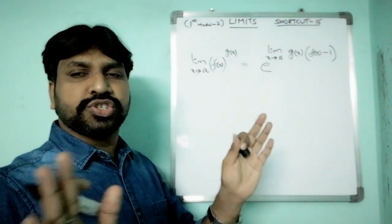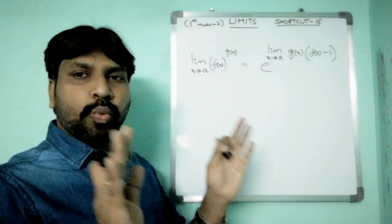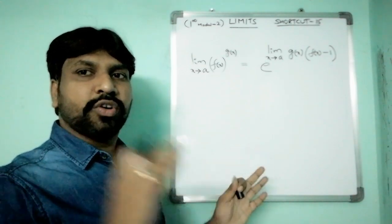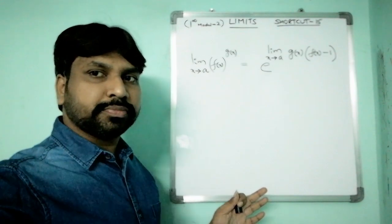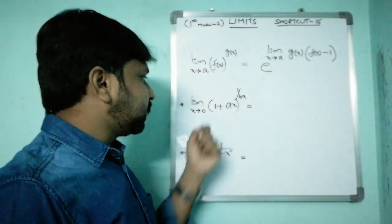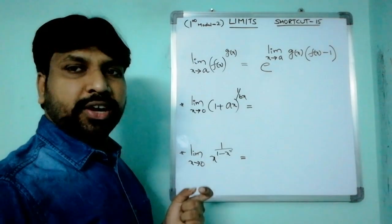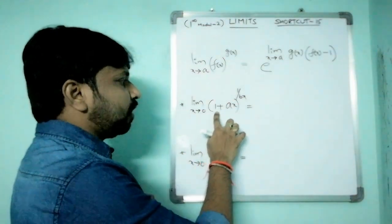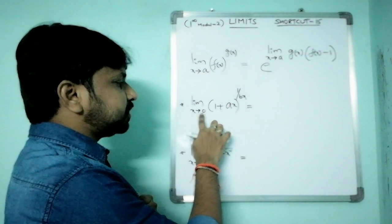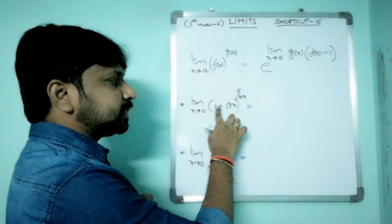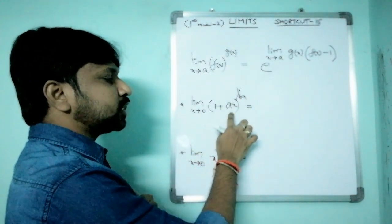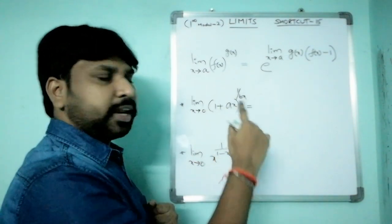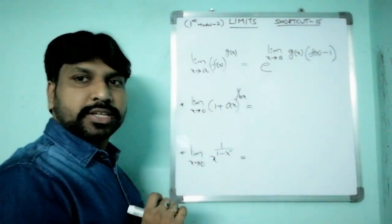Look at one example. First check whether it is the 1^∞ model or not. If you substitute x = 0, you get 1 + 0 whole power 1 by 0, that's 1^∞. Yes, it is the 1^∞ model.